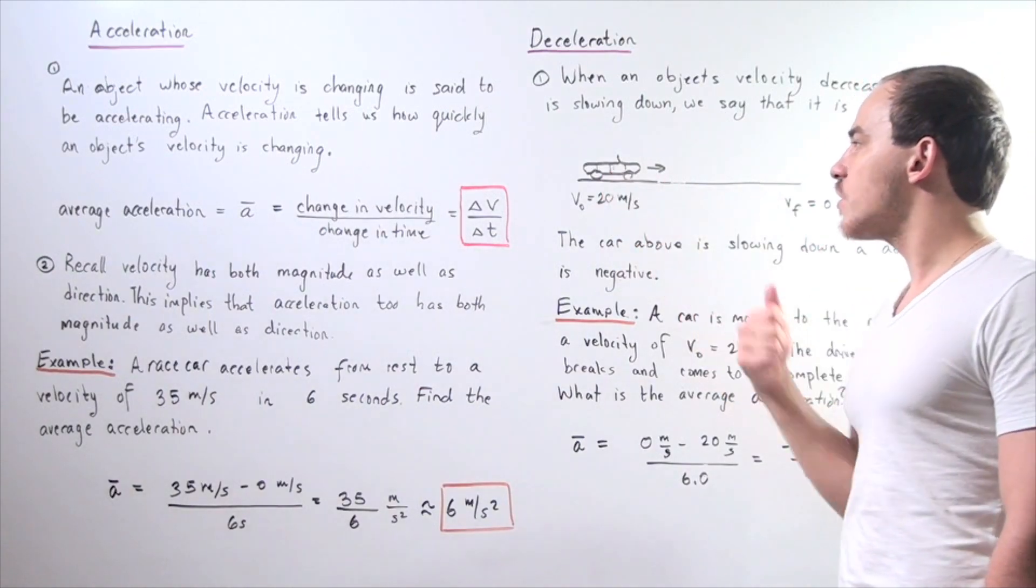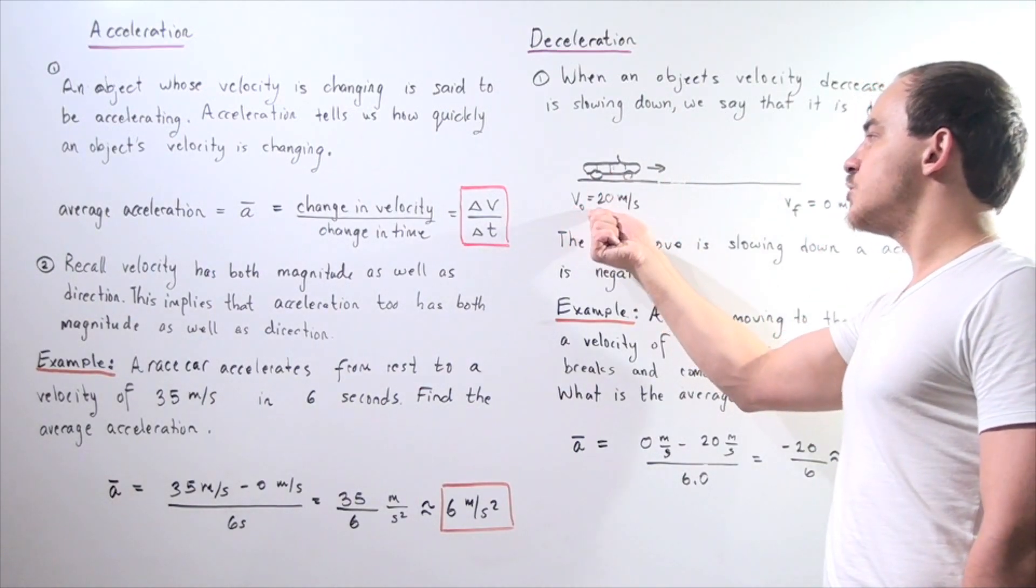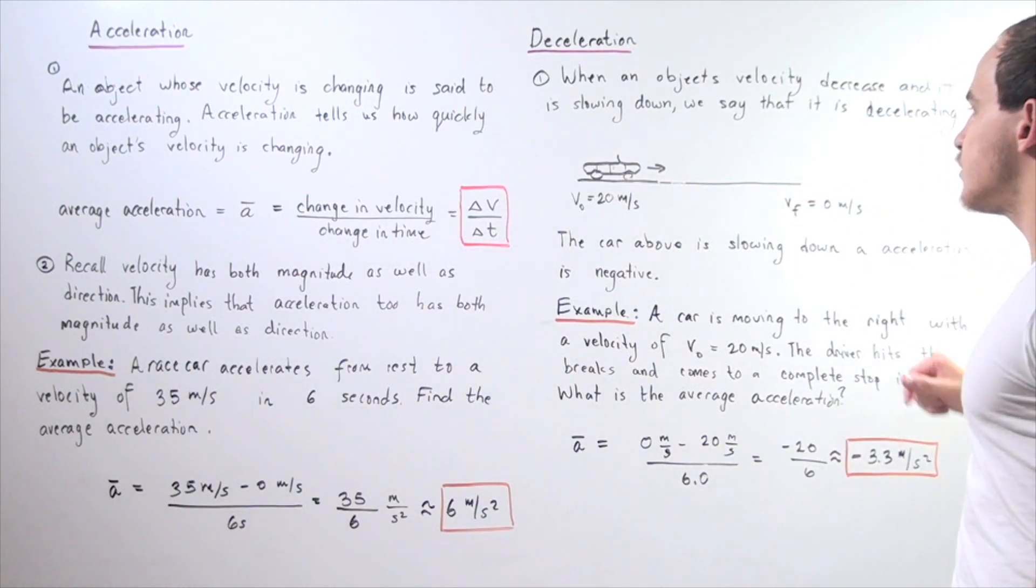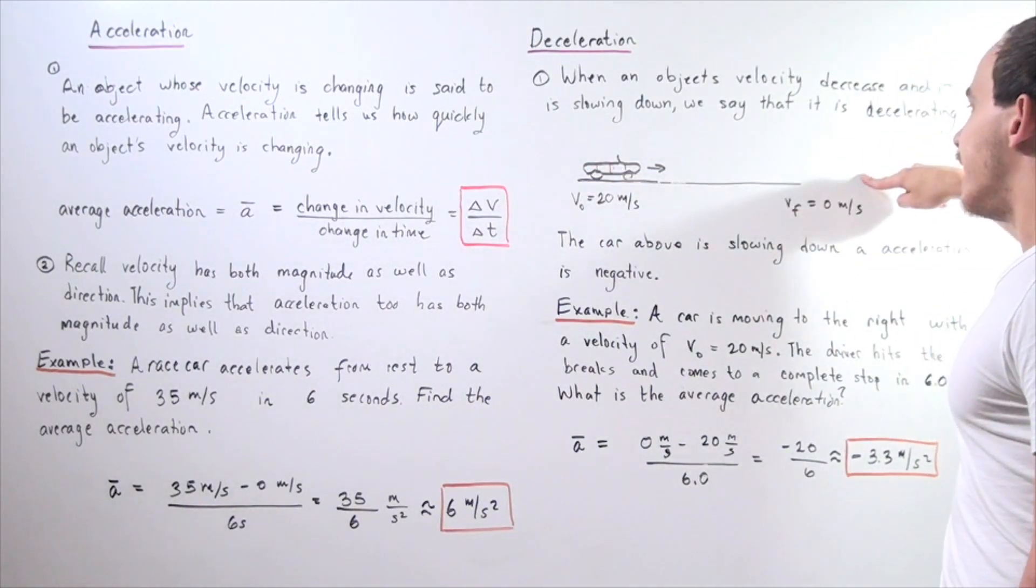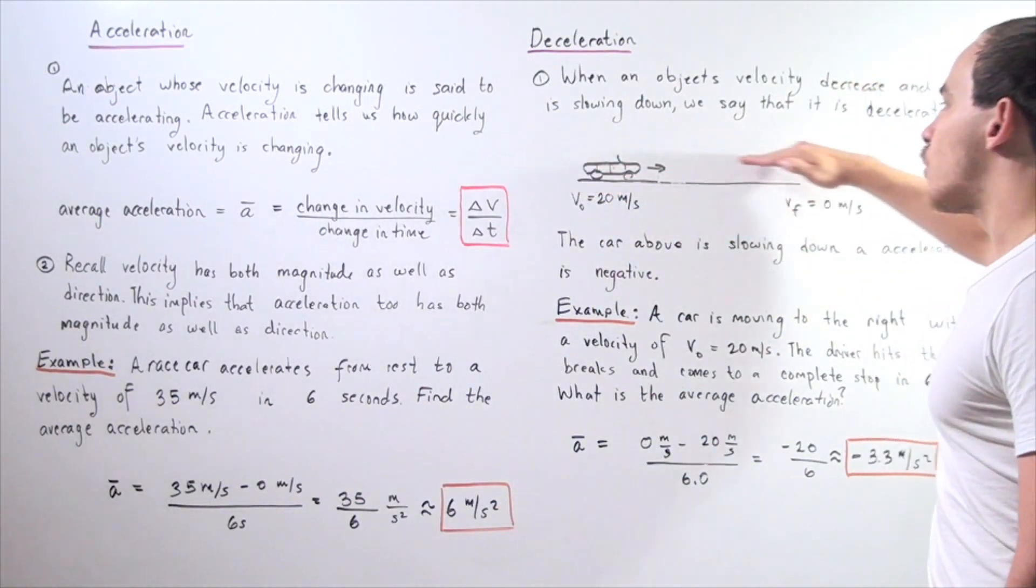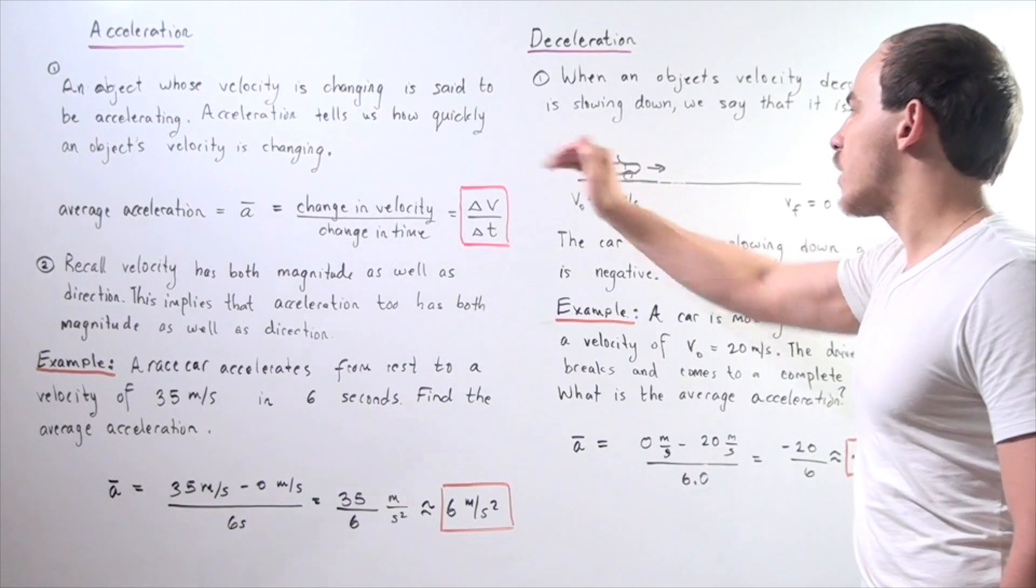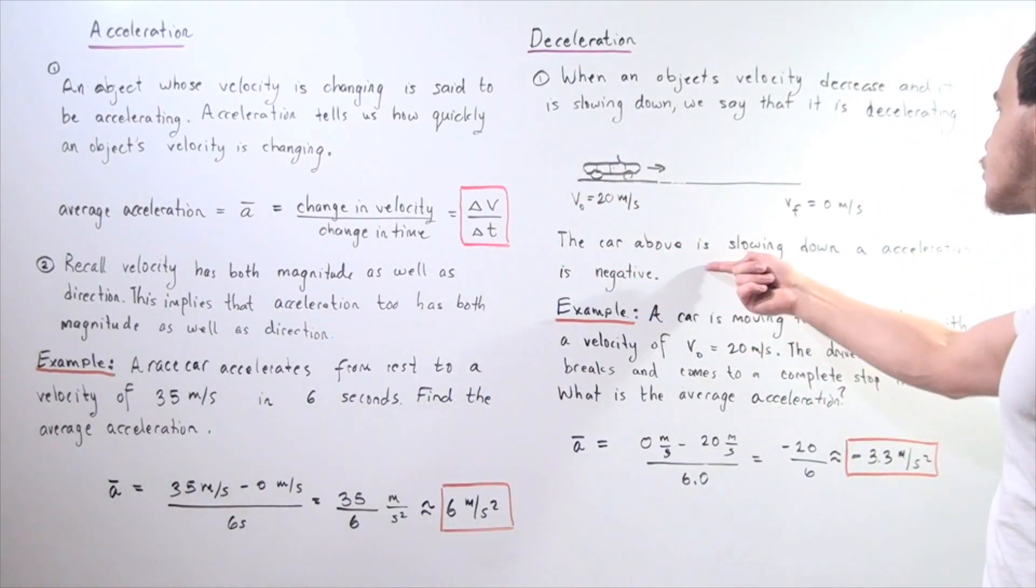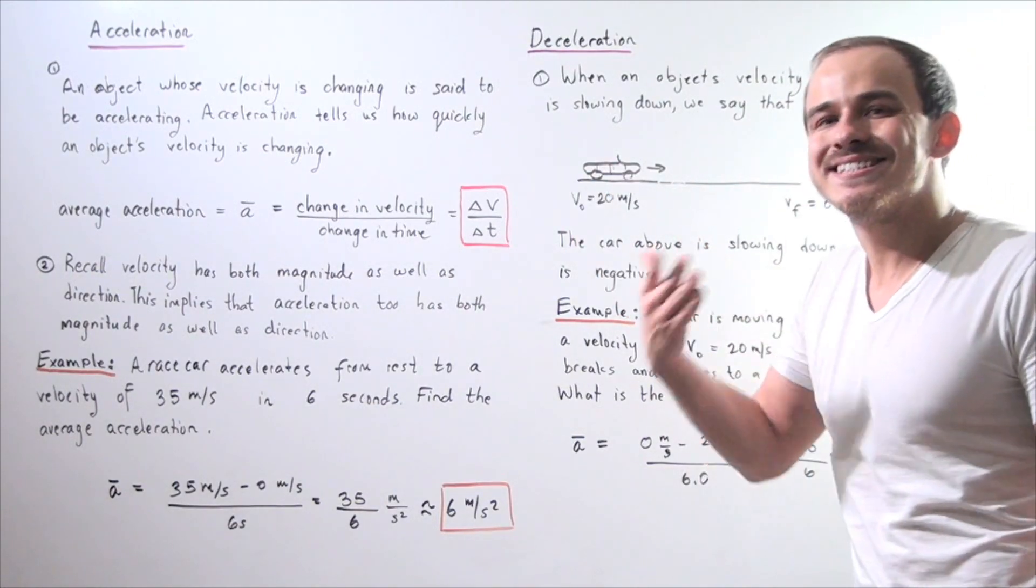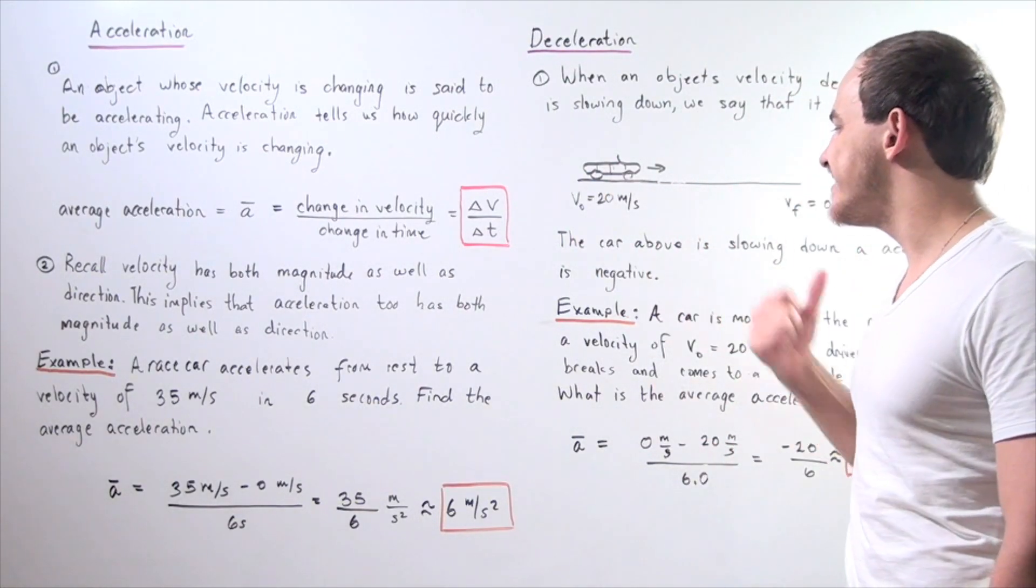Let's suppose our car is moving from some velocity of 20 meters per second to a velocity of zero meters per second. As it goes this way in the positive direction along the x axis, it's decelerating in the opposite direction. The car above is slowing down because it's accelerating in the opposite direction or decelerating. Its acceleration is negative.